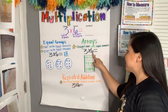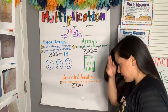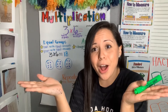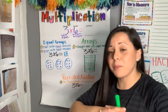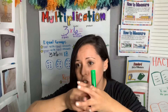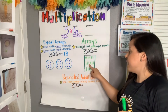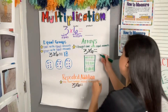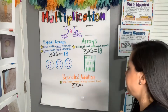There is our array: three rows with six in each row. Remember, multiplication is an operation where we add the same number several times to find the product. We're joining numbers together — not separating, but joining. Counting them all together: one through eighteen. Our product is 18, just like it was when we used equal groups.